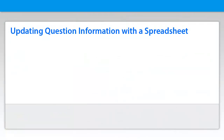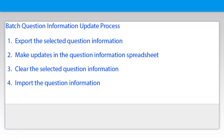Now let's look at how to do batch changes to question information using a spreadsheet. The basic process is to export the question information, make the updates in the spreadsheet, then clear the question information, and then import the question information from the spreadsheet.